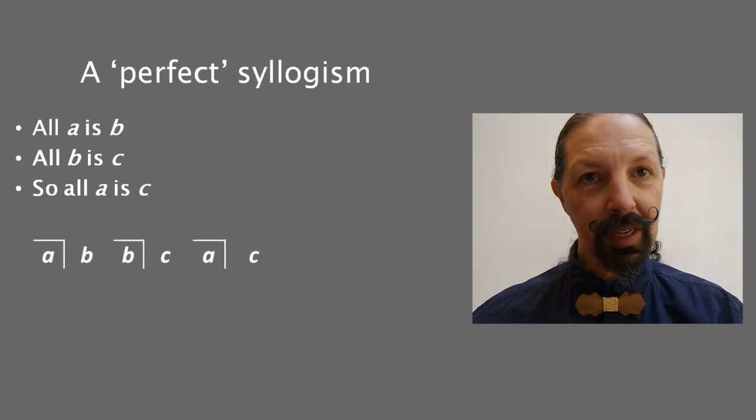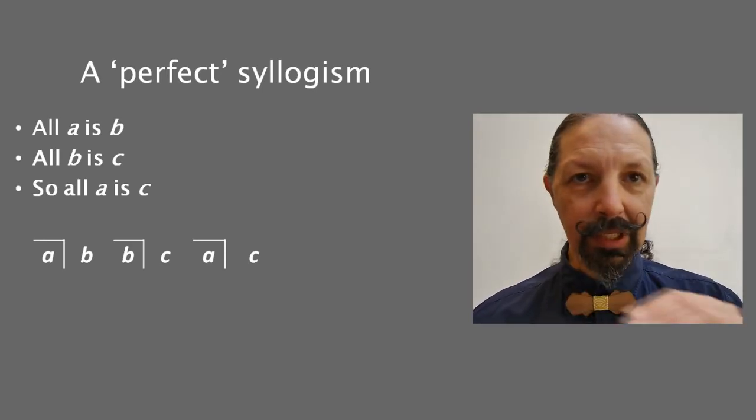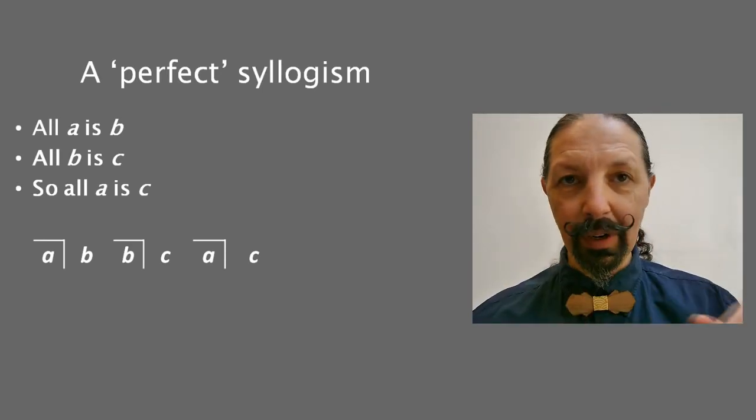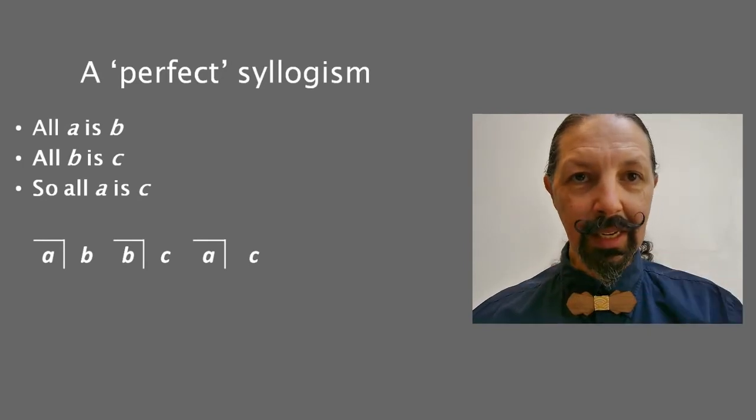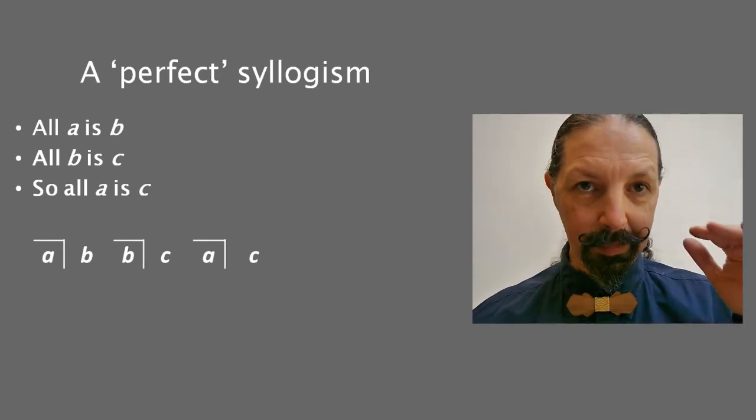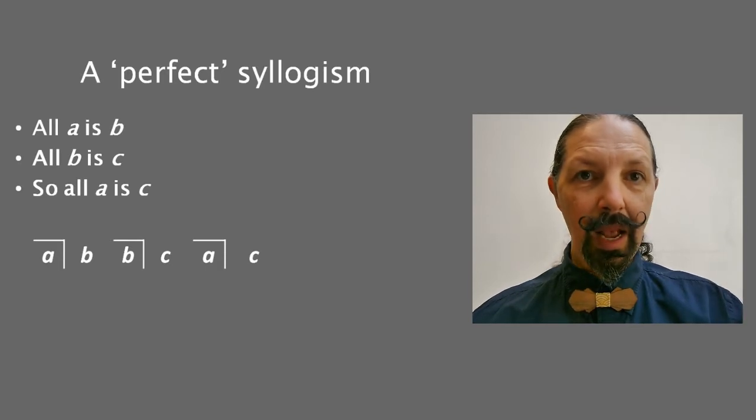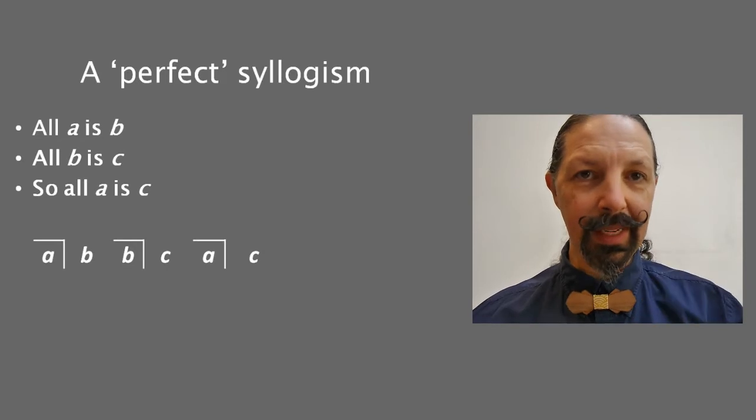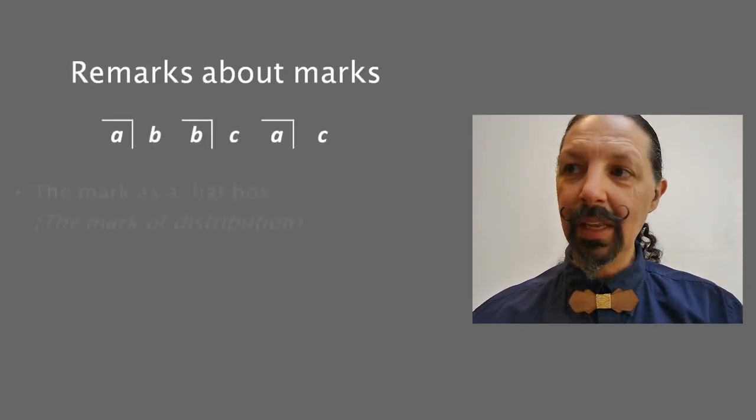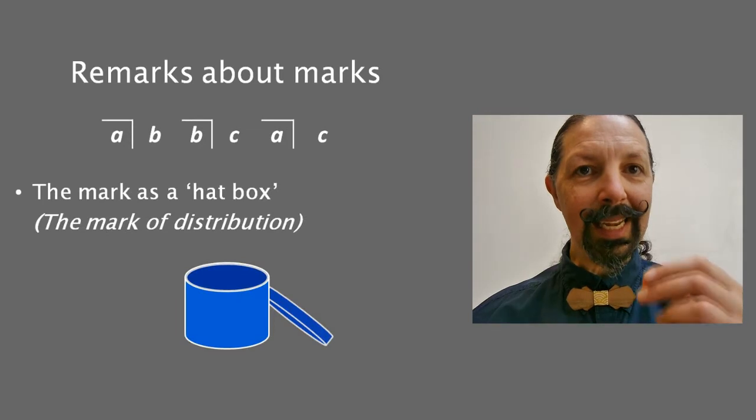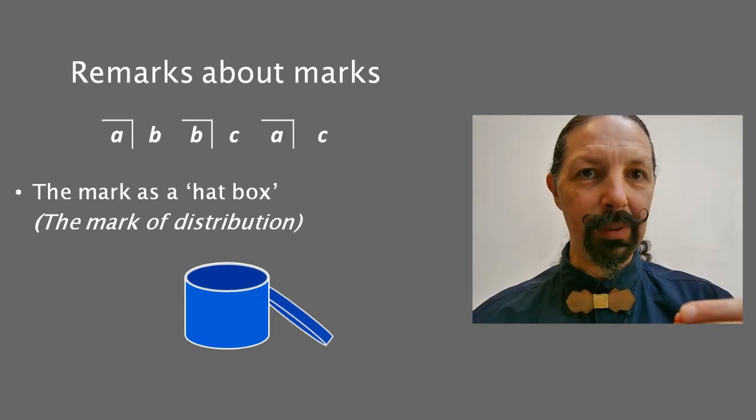This is what Spencer Brown's version looks like. You only need two levels, you only need the level of terms, you only need the level of marks, and that's it. And what's useful about using marks, that none of the other visual renditions have, is that they operate exactly how logic operates.